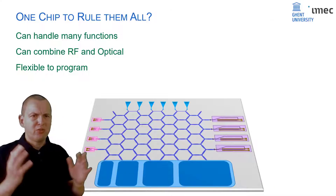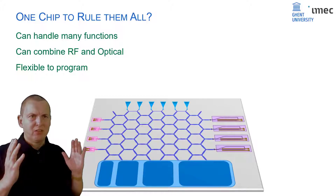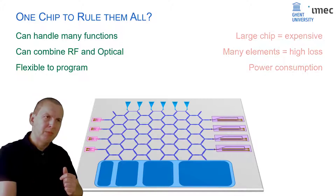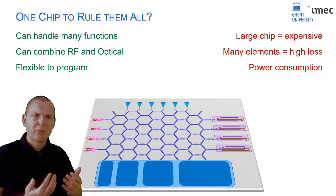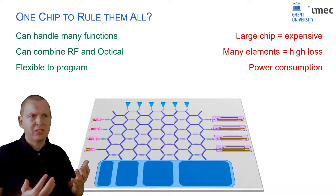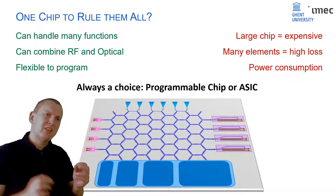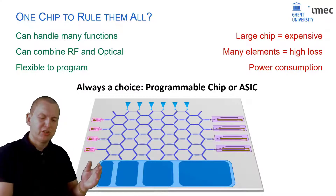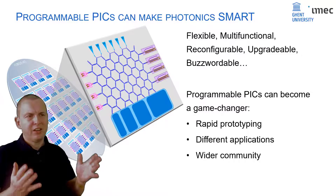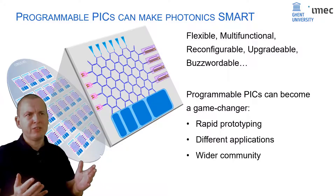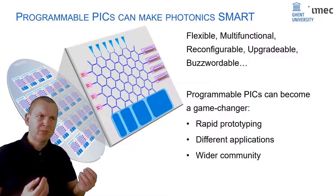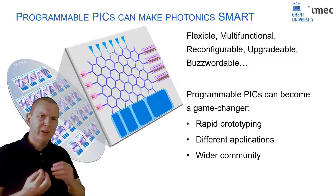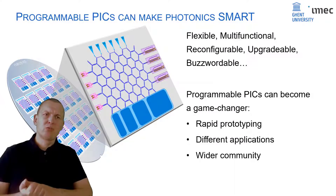Does this give us one chip that can essentially do everything? In theory, yes — it can operate in the RF and optical domain and is flexible to program. But it has the same limitations as programmable electronics: these larger chips can be more expensive, especially in high volumes; the many elements will have higher loss; and it will also have higher power consumption. So in the end it will always be a choice — just like in electronics, you choose between a generic programmable chip or an application-specific chip. Programmable photonic circuits, which are now in their infancy, could really make photonics smart — more flexible, multifunctional, and reconfigurable. It can be a game-changer, just like programmable electronics was, because it enables rapid prototyping for a variety of applications and could open up photonics to a much wider community.